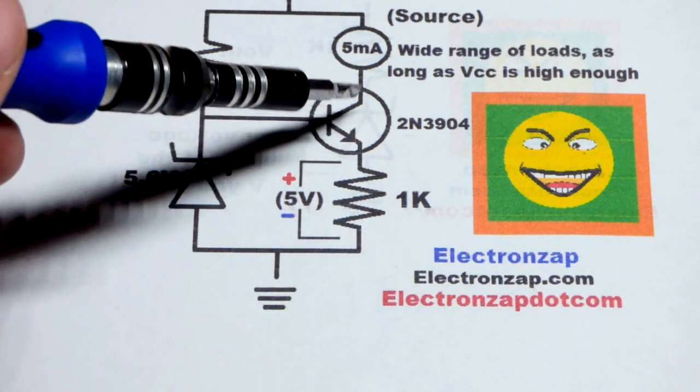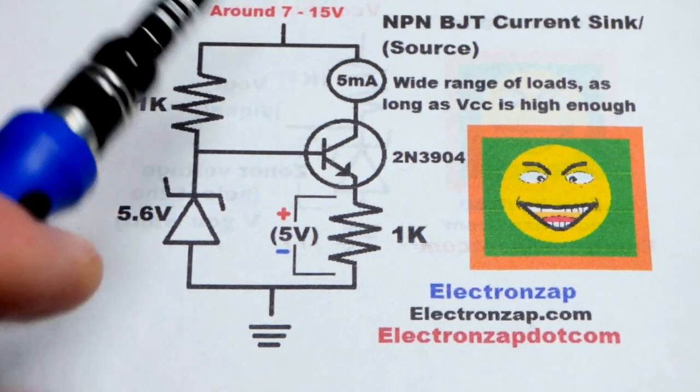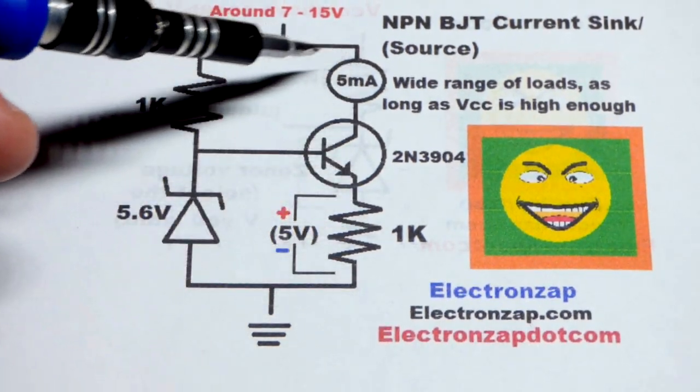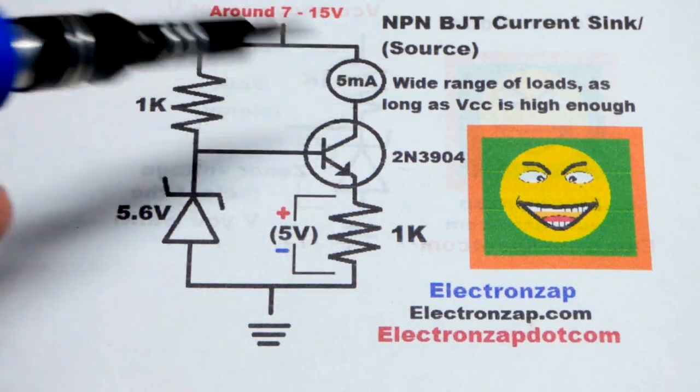There's 5 volts, so we'll have 5 milliamps of current going through that resistor. Series components have the same amount of current going through them, and so that 5 milliamps is going to be along that whole path right there.